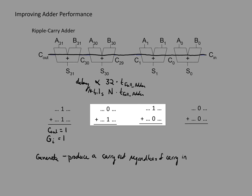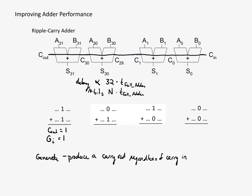Next we look at the cases where only one of the two input bits is a one. In this case, we can't say that it carries out for sure — it really depends on what the carry in is. This is referred to as propagating the carry: if there's a carry in, then it will continue to propagate as carry out. So for the i-th position, to propagate means to produce a carry out if there is a carry in.